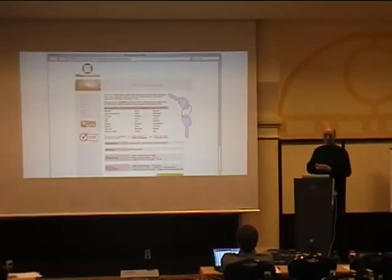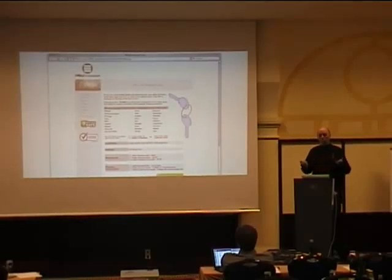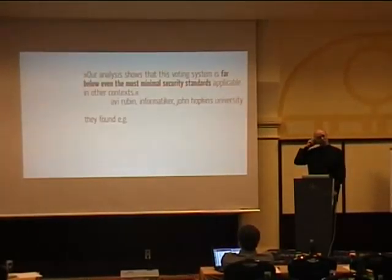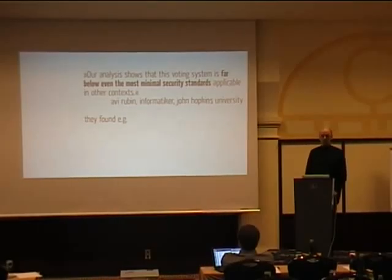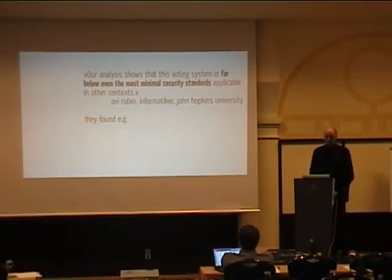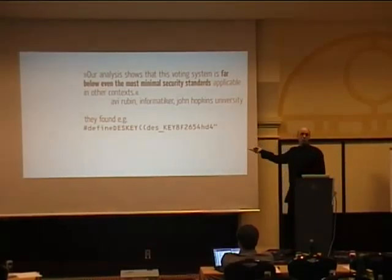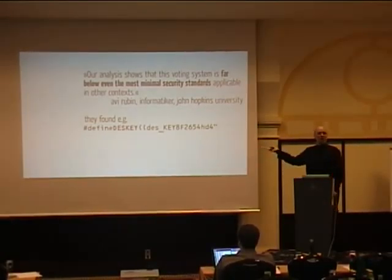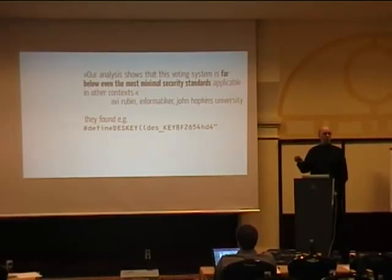The question is: if you open the machine hardware, is this a security risk? The source code for these machines leaked onto the internet, which is a very interesting fact. It was analyzed by A.V. Rubin and his students. They showed this voting system is far below even the most minimal security standards applicable in other contexts, like gambling. They found, for example, a line: 'define this key, DES and the key.' Not only is the key defined in the source code — which is a fallacy — but they also use DES, which has been cracked for about 10 years. This is really ridiculous for a machine that is a single point of failure in our democracy.